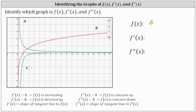From here, because function b is always increasing, or because the slopes of the tangent lines are always positive, function a must be f prime of x, because function a only has positive function values. Just to verify this, let's sketch the tangent line to f of x at x equals one. If we sketch the tangent line, we can see the slope of the tangent line is positive one, which is the function value given by f prime of x, or graph a.